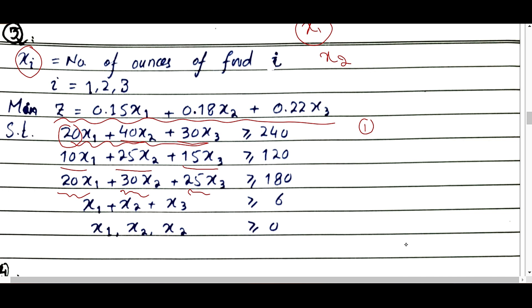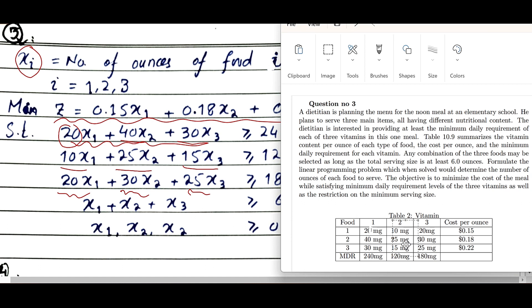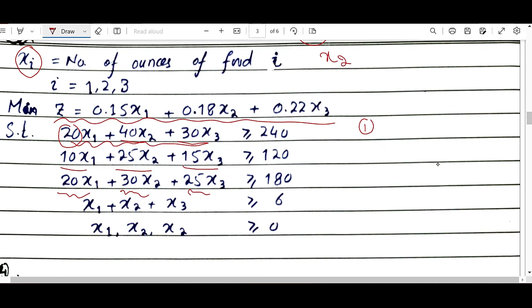After this, there is another constraint that any combination of the three foods may be selected as long as the total serving size is at least 6. This means the serving size should be at least 6, it can be more than 6, but it should be at least 6. So x1 + x2 + x3 ≥ 6.